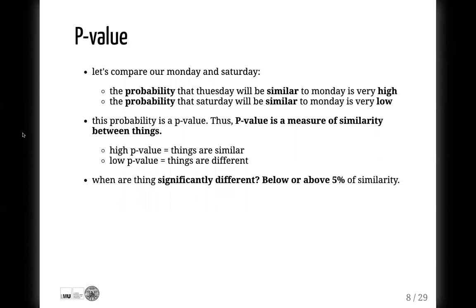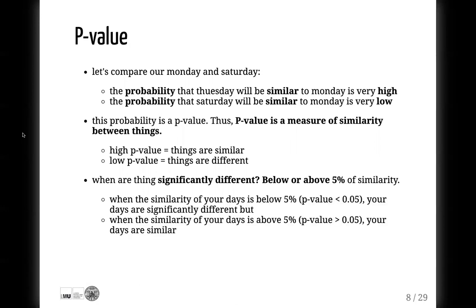When are things significantly different? Below or above 5% similarity. This threshold was chosen by Ronald Fisher arbitrarily — it doesn't have any scientific background, but it's stuck in science and we use it all the time. When the similarity of your days is below 5%, your days are significantly different. When the similarity is above 5%, your days are similar.